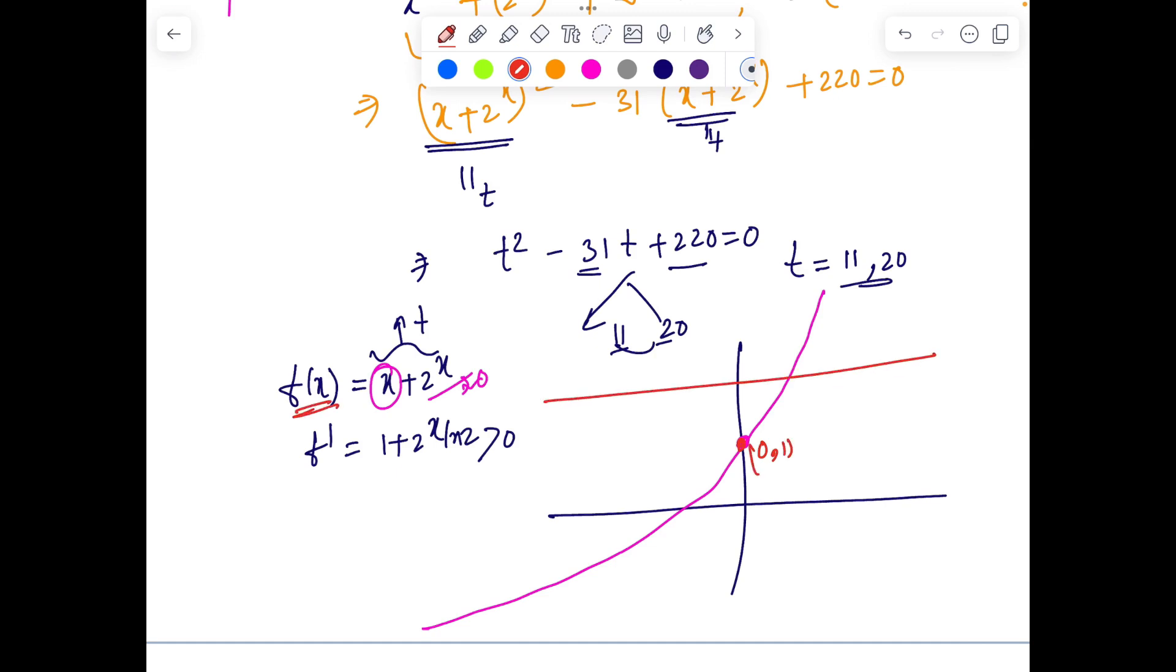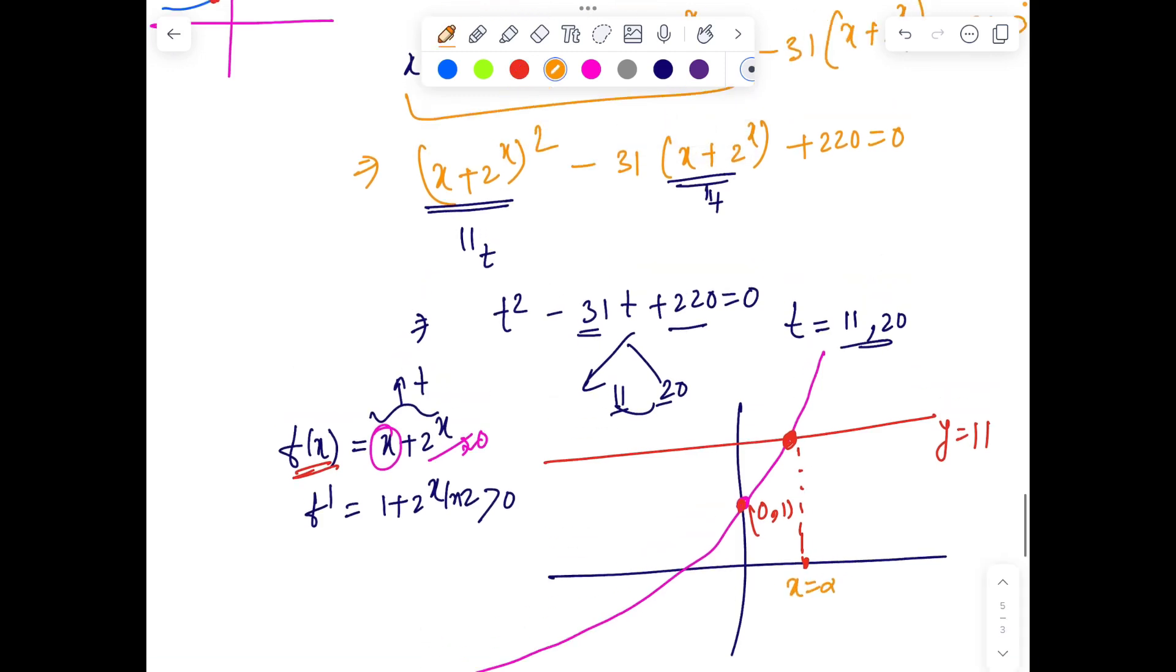So when the value of T equals 11, so let's say this is 0 comma 1 and the value of T equals 11. So when the output of F of X is 11, let's say Y equals 11, I'll have only one value corresponding to X, right? Let's say X equals alpha. And again, when the value of this expression is 20, Y equals 20, this line will have exactly one value X equals beta.